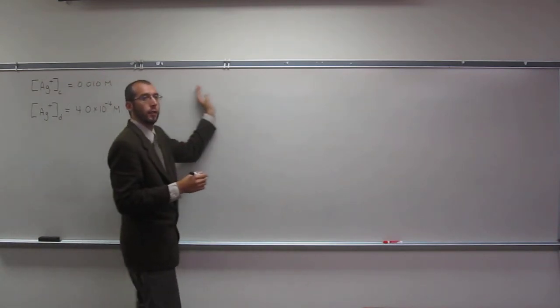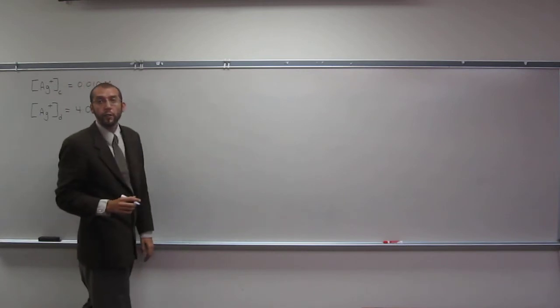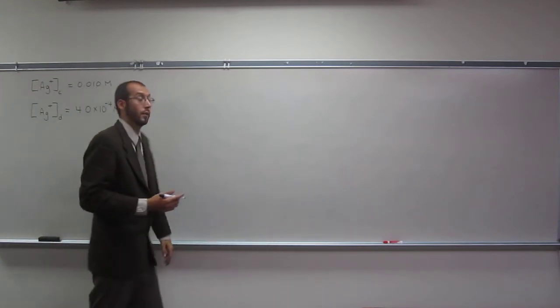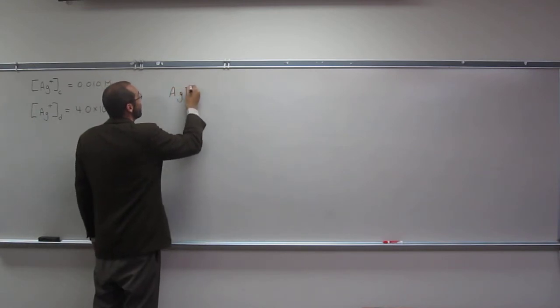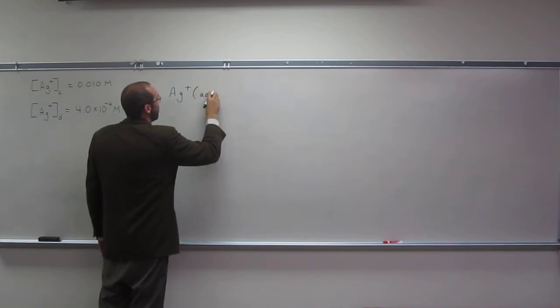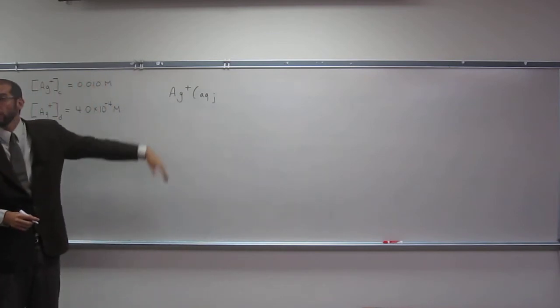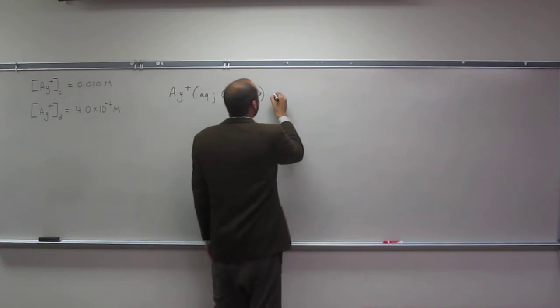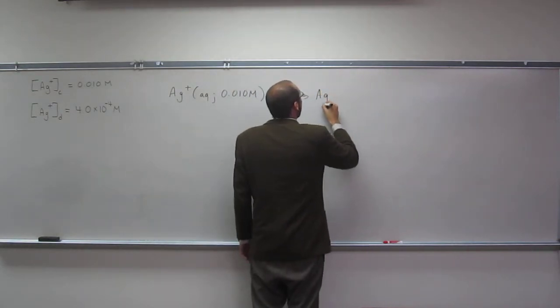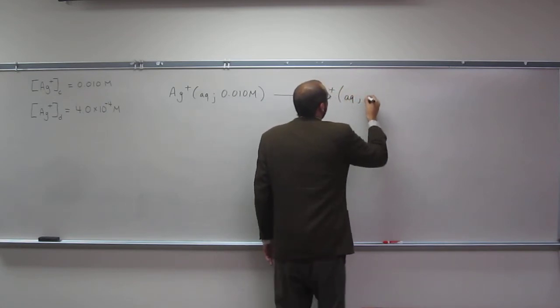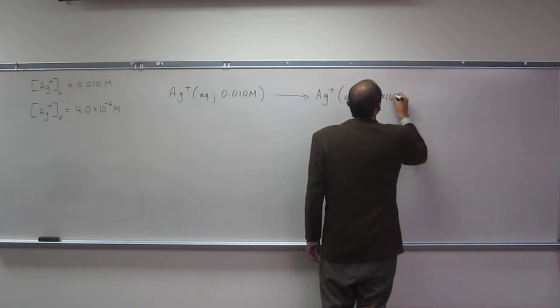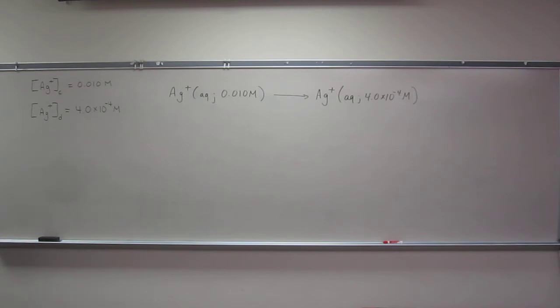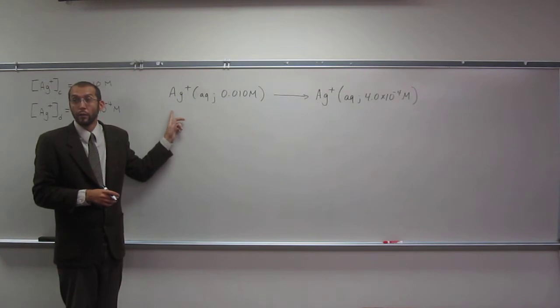So let's write our cell equation. So it's going to look a little strange from the ones that you've been writing before, because you're going to have, on the reactant side and on the product side, the same thing. The silver plus ion. So it's going to be Ag plus aqueous. Remember how we do this, for these concentrations, put our semicolon there, and then write our concentration. And that goes to Ag plus aqueous, 4.0 times 10 to the negative 4th molar. So how many electrons does silver need to be reduced? One. Just one.